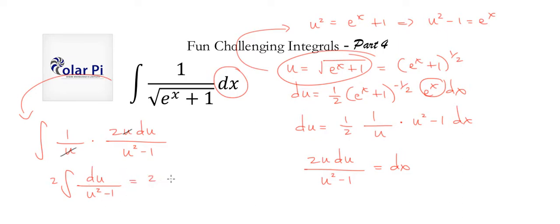then you should be able to write 2 times negative 1 half over u plus 1, and then plus positive 1 half, sorry, I don't know what I was going to say there, divided by u minus 1 du. Cool.